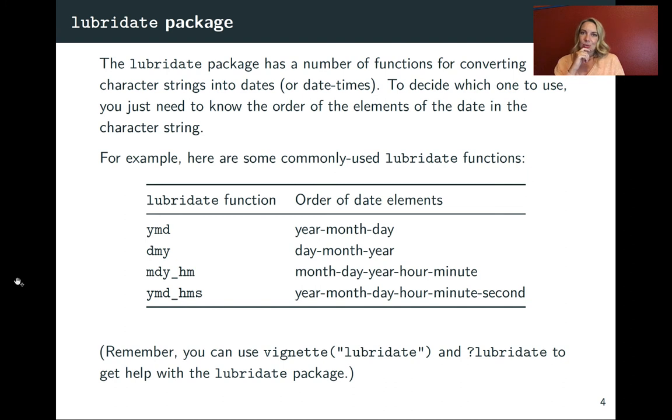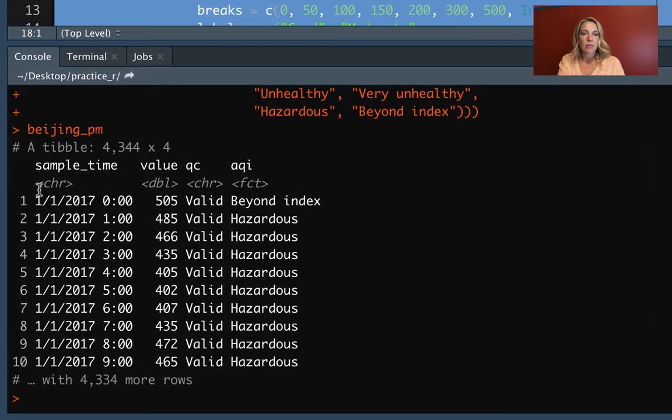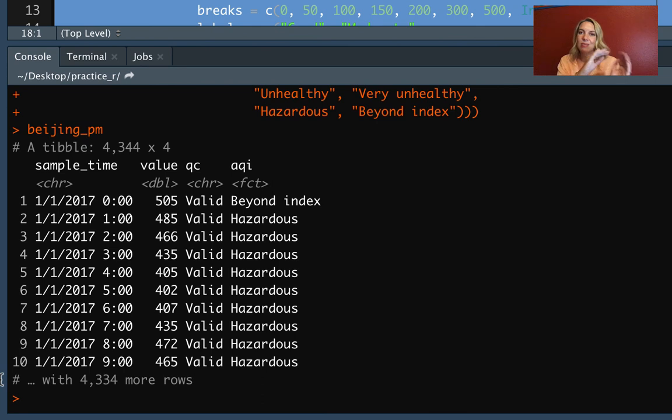There are a number of functions in the lubridate package. And again, the magic here, the way to remember them, is the order of the date elements in the data that you've just read in. So let's take a look again at the Beijing data set. We have it down here, and here's our sample time. We can see already, get a little bit of an idea of the order. It's hard to tell right now if month or day is first, but clearly we have year after that, and then we have hour and minute. We can look at a few more.